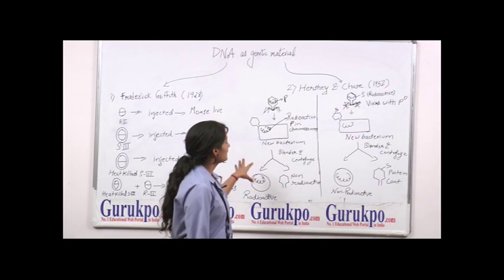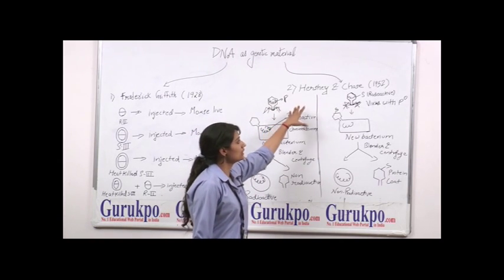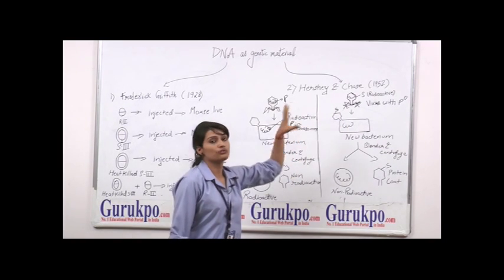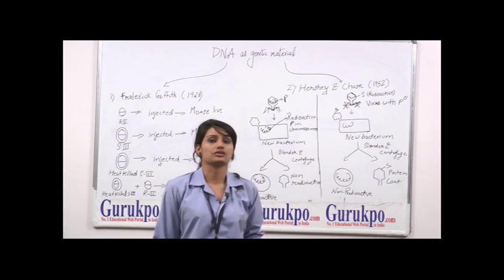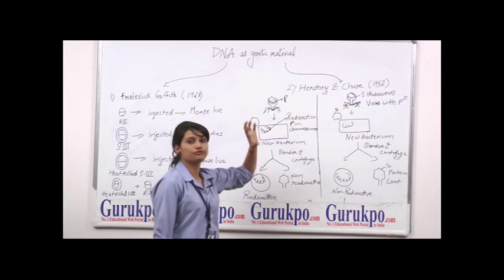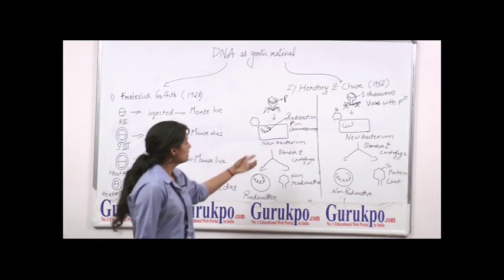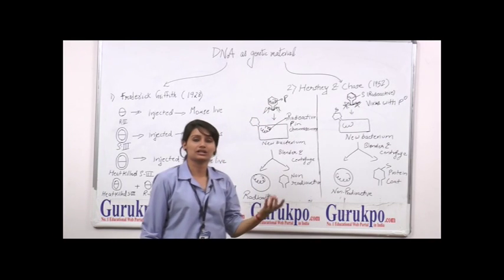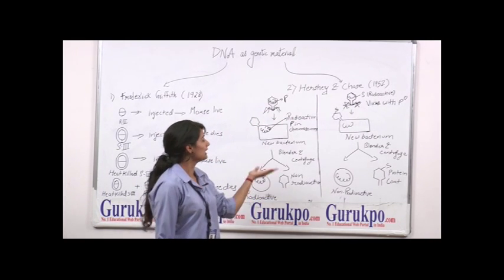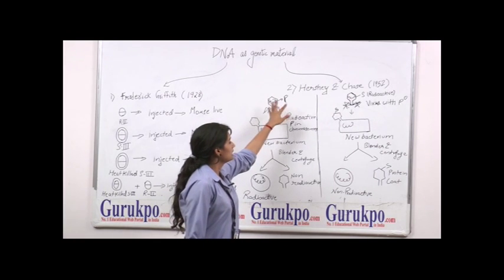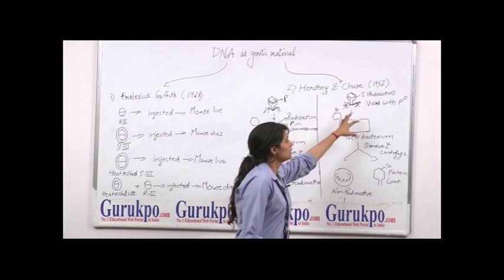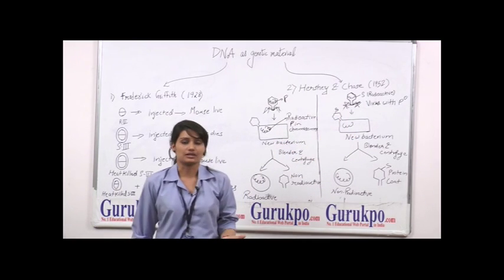The next experiment was performed by Hershey and Chase in 1952, also known as the bacteriophage infection experiment. First they studied the structure of the virus, then they grew the virus in bacteria on a radioactive-containing medium — one medium had radioactive phosphorus present, whereas the other medium had radioactive sulfur present.